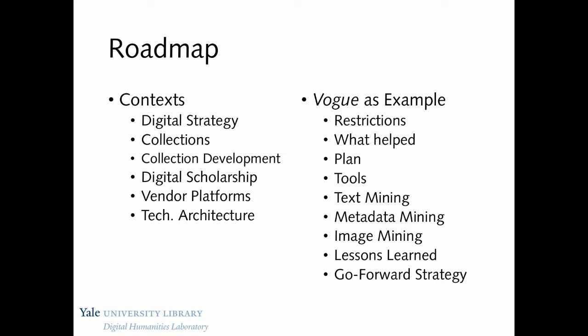That was 2012, and what I want to do in today's talk in 2016 is take us through a roadmap with two paths. On the left, I want to talk about the contexts for text and data mining: the library's digital strategy, our collections, collection development, digital scholarship with vendor platforms and technical architecture. On the right is a different path which will interleave with the left, having to do with a very particular corpus we decided to begin with — Vogue magazine. I'll talk about the restrictions present on the Vogue digital archive, what helped us overcome those restrictions, our plan, the tools we used, some of the text mining, metadata mining, image mining, visual culture computation, the lessons we learned, and our strategy for going forward.